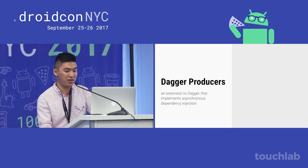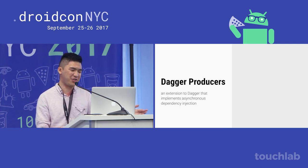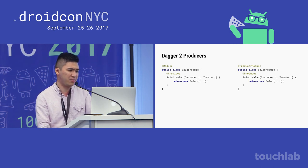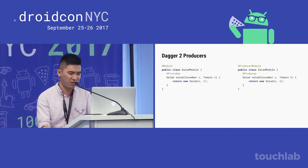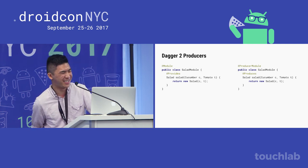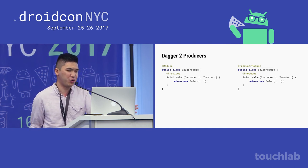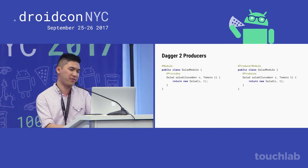Another way of doing this that is part of Dagger is a thing called Dagger producers — the documentation says it's an extension to Dagger that implements asynchronous dependency injection. With Dagger 2 producers, they have a whole different set of annotations: @Module maps to @ProducerModule, and @Provides maps to @Produces. That's all you have to change and it does the rest of the work for you pretty much.